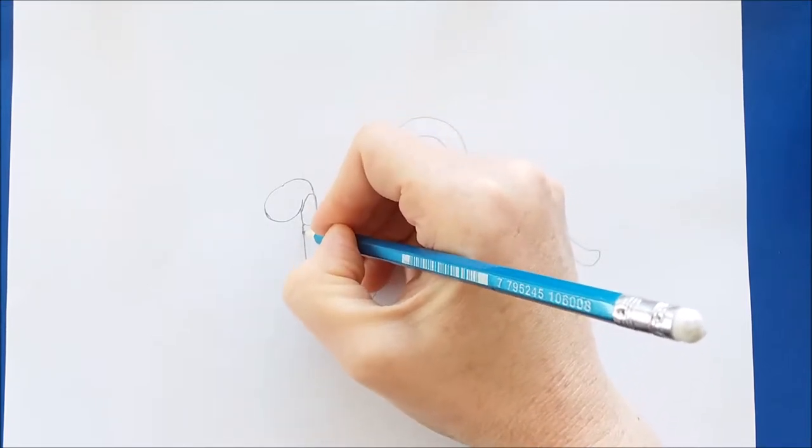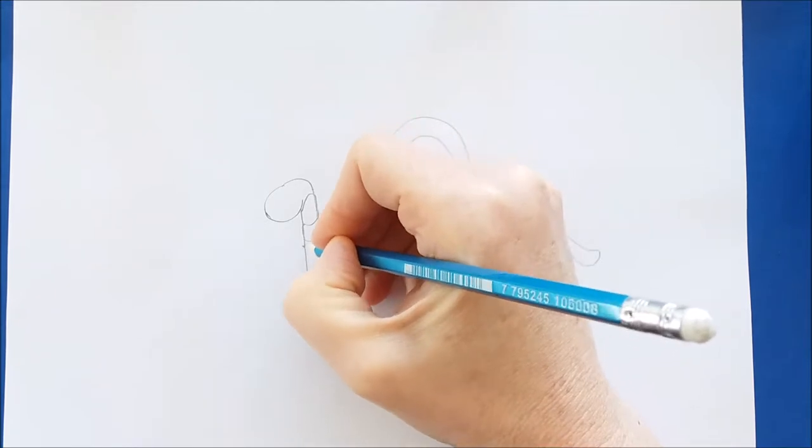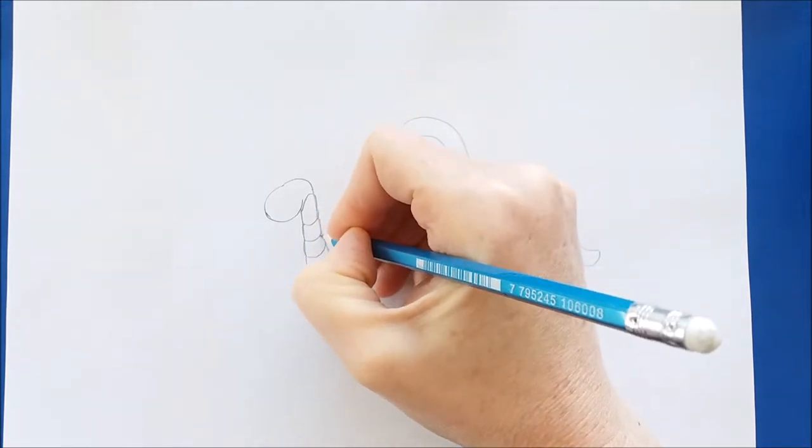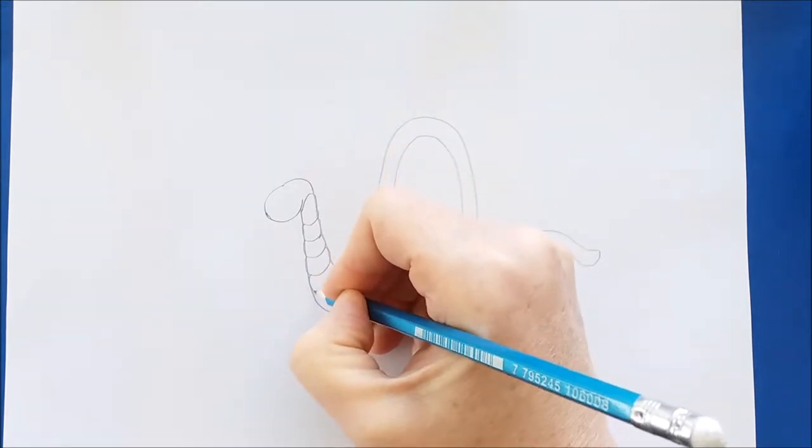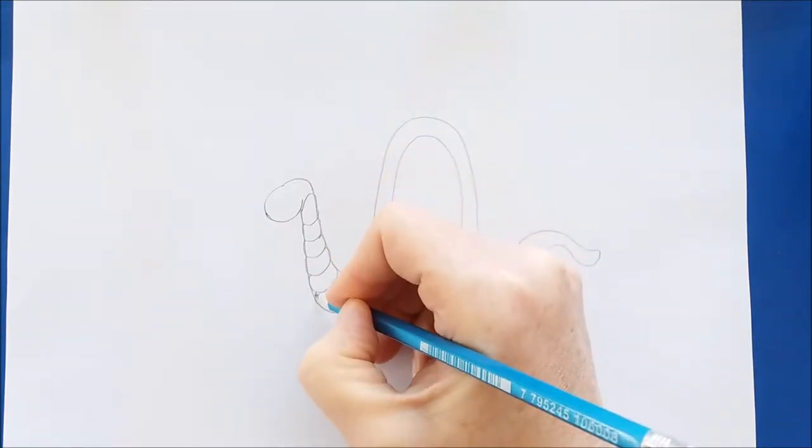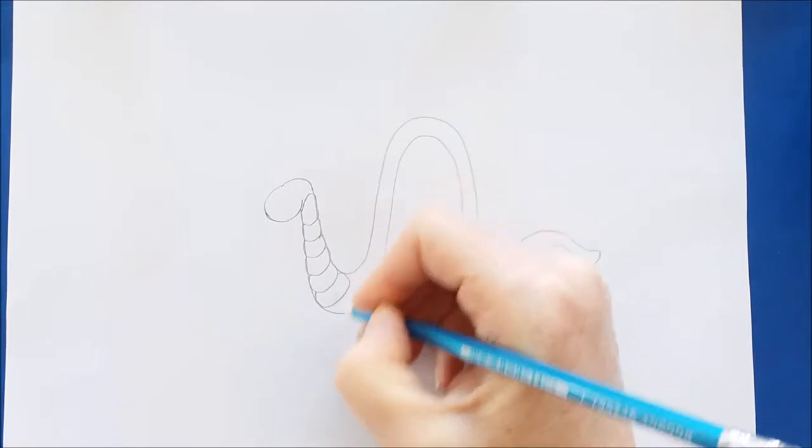Then I'm going to add the sections of the inchworm, which are just circles. And at this point I'm going to speed up the film so that you don't have to watch all of these circles being drawn.